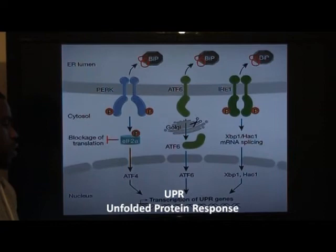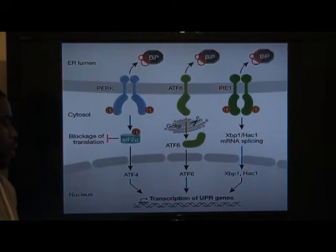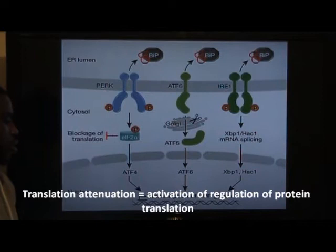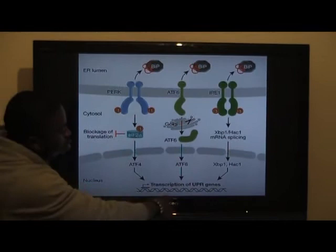UPR — the unfolded protein response — is the pathway to decrease misfolded proteins in the ER lumen. This pathway activates the regulation of protein translation, also known as translation attenuation, and induces UPR transcriptional genes, which in turn leads to the production of chaperones.